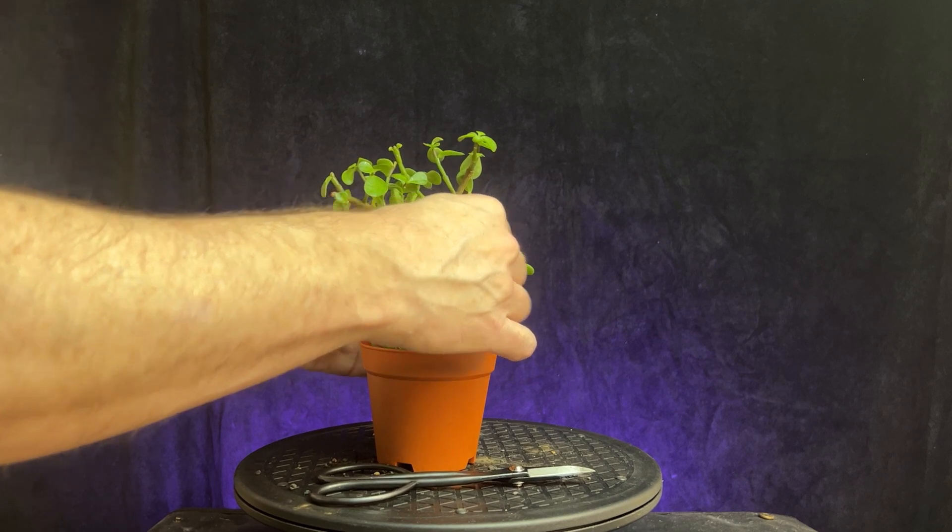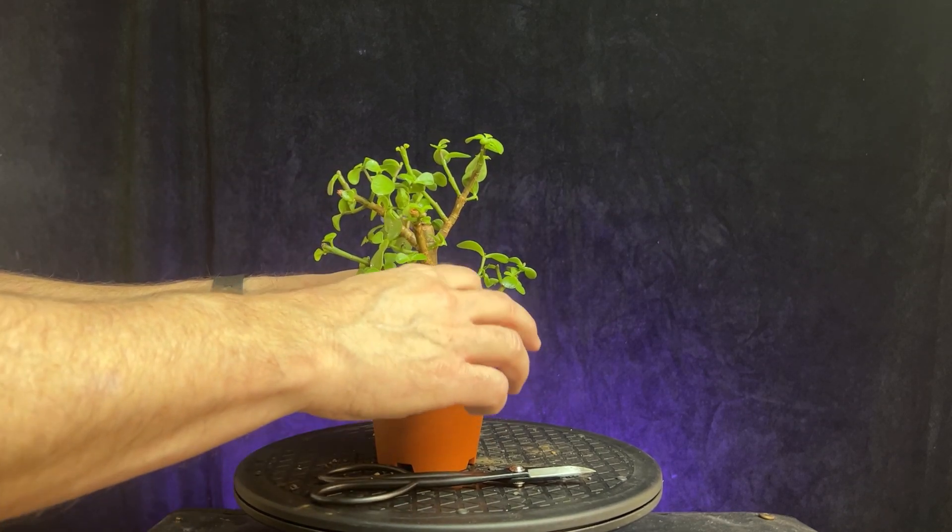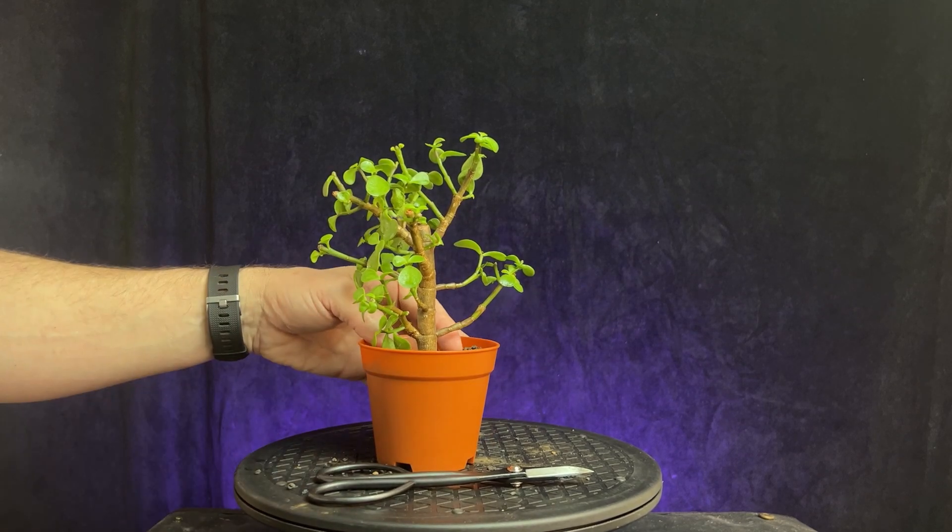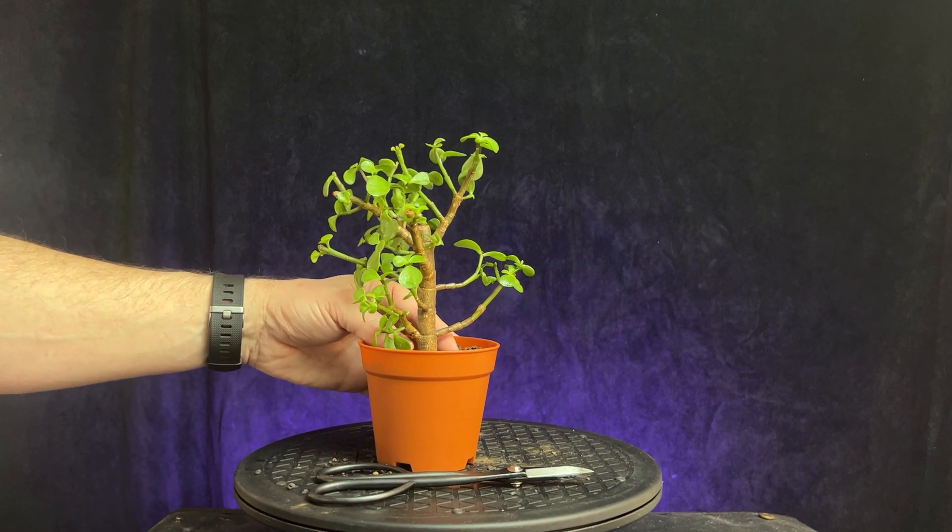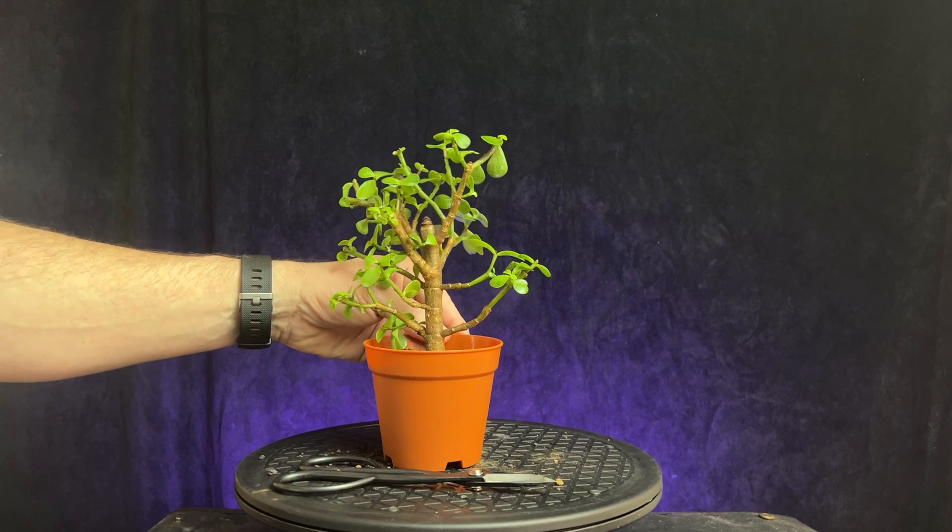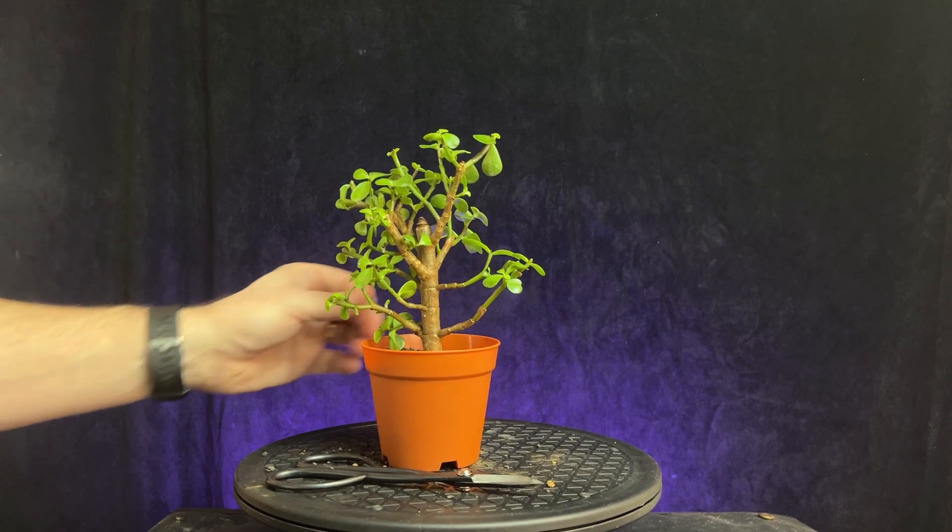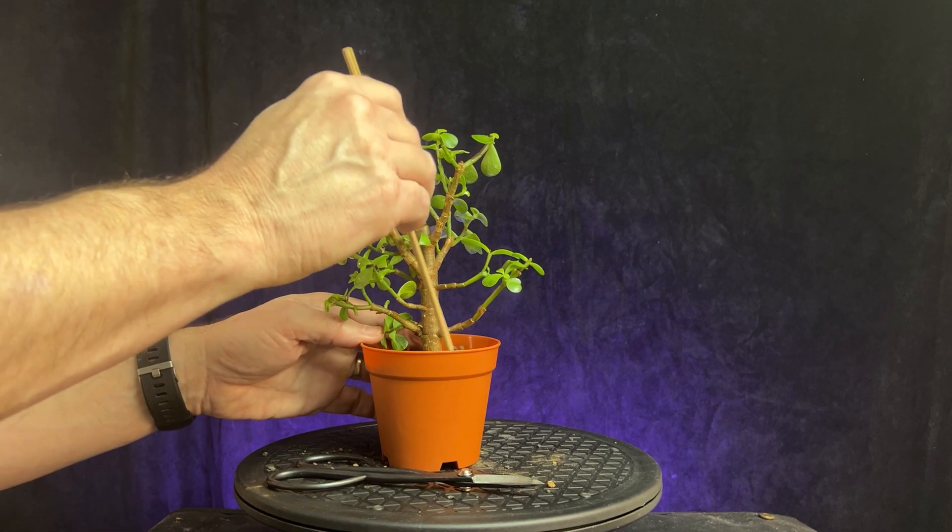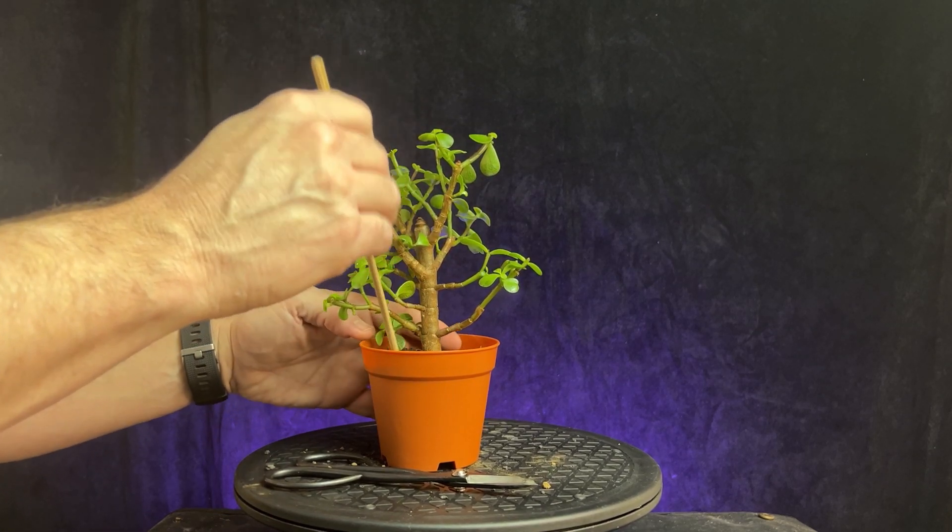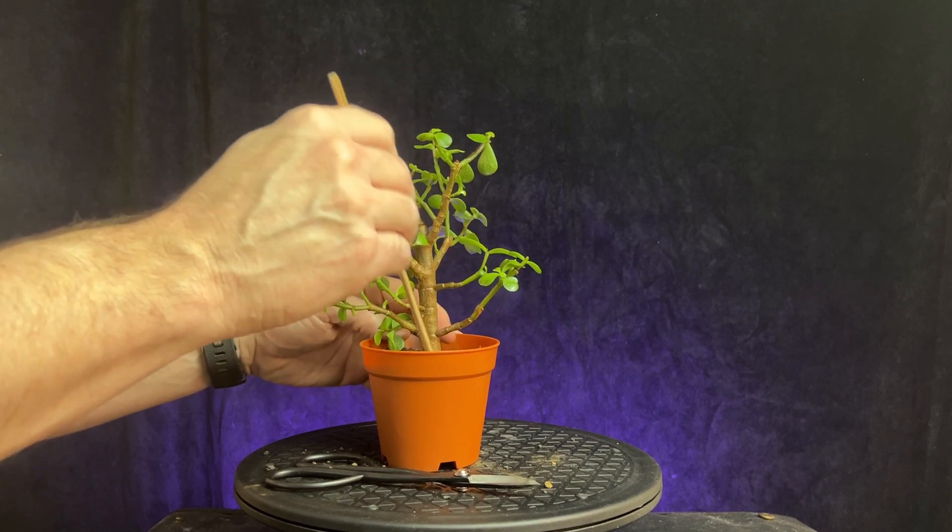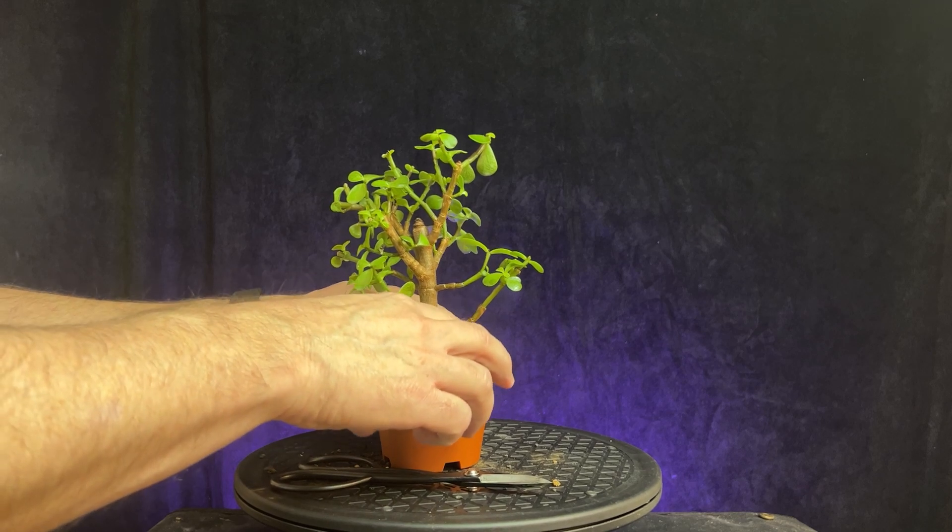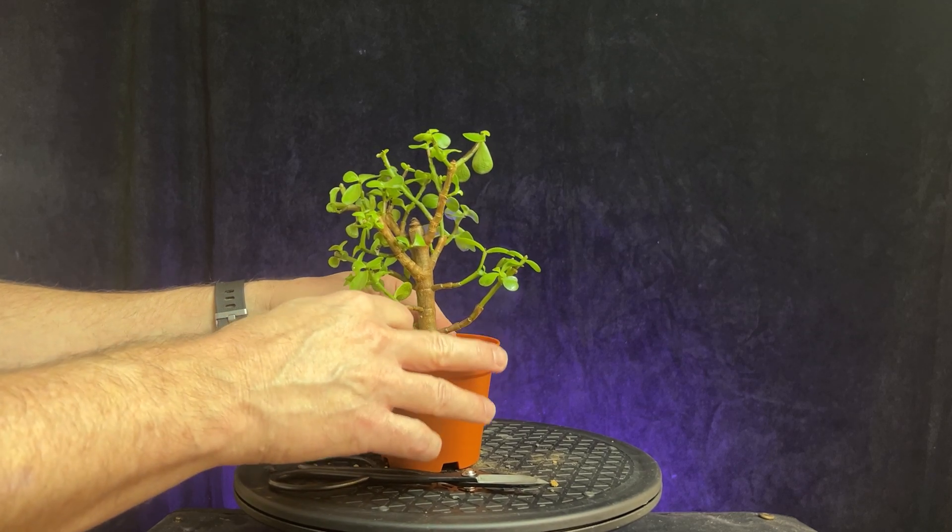So I just pack it in with my fingers at this point. Don't really need to use the chopstick just because the roots aren't that dense. If the roots were more dense, you would use the chopstick and poke down in there just to make sure the soil gets around all the roots and eliminates any air pockets. But since the roots are so small and young, you don't really need to do that.